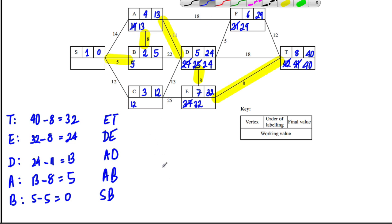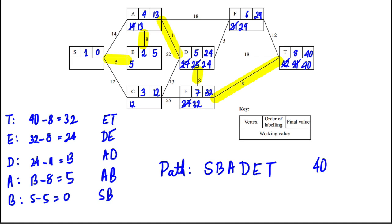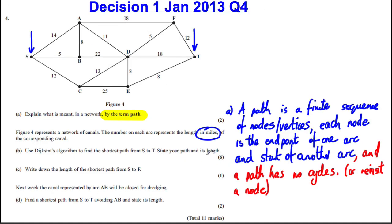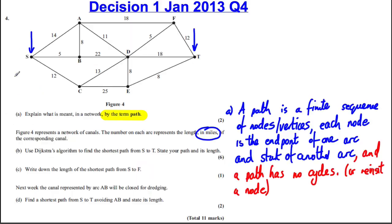Reading forwards, the shortest path is S → B → A → D → E → T with length 40 miles. Don't forget the units — we're dealing with lengths in miles. This completes parts A and B.